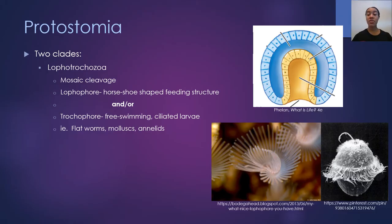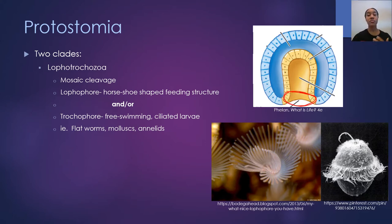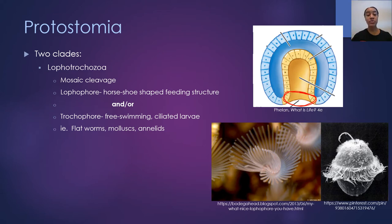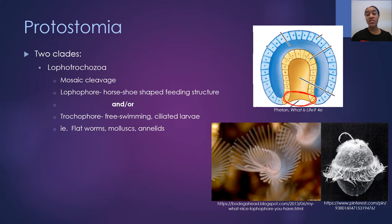Before we dig into what Platyhelminthes are and their anatomy, let's step back and review protostomes. Protostomes are organisms whose blastopore — this opening that results from gastrulation — becomes the mouth. It's a quite large grouping of organisms. Within Protostomia, we have two different clades. The first we're going to talk about is Lophotrochozoa. These organisms are protostomes and they undergo mosaic cleavage. They have one or both of two distinct characteristics.